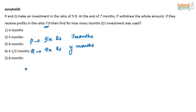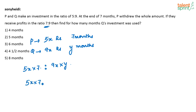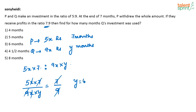So what is the amount invested by P? P has invested 5X rupees for 7 months and Q has invested 9X rupees for Y months. This is the ratio in which the profit will be shared between P and Q, and this ratio is already given as 7 by 9. So solving for Y, you get Y is equal to 5 months.